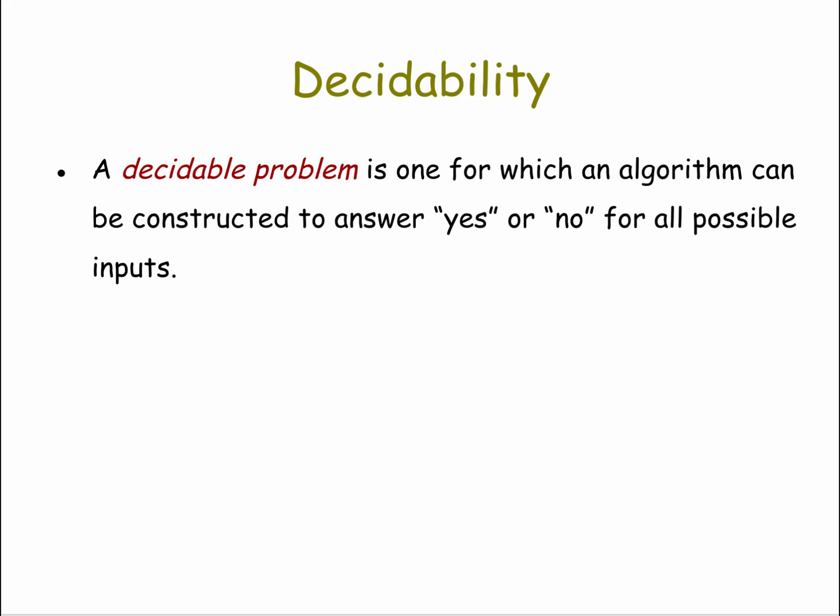Let's start with undecidable problems. A decidable problem, by definition, is one for which an algorithm can be constructed to answer yes or no — to make a decision for all possible inputs. A simple example would be the problem of determining whether a number m is even or not. Given any number m, we can write an algorithm that will answer yes or no as to whether that number is even.